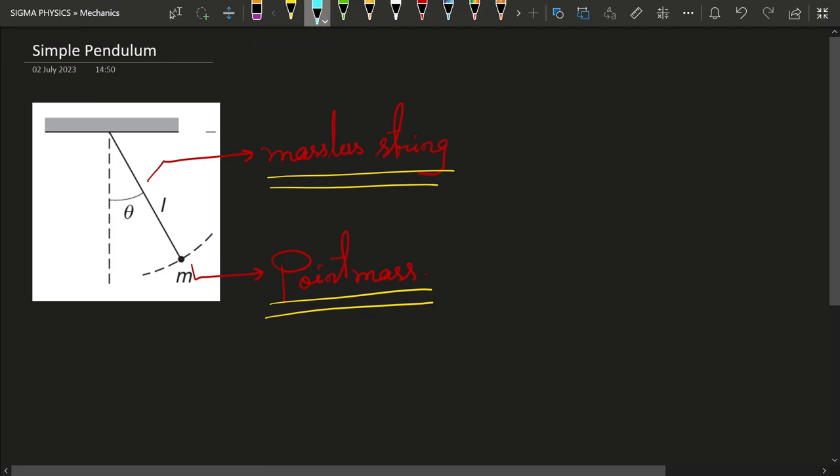If you have performed experiments with pendulums in your lab, then you will know that real pendulums actually consist of a string which has some mass and a bob attached to that string. But here we have a point mass and a massless string because studying real life systems is very hard. Before we study real life systems, we have to look into ideal systems of this type, and then slowly we remove these idealizations and move towards real life systems.